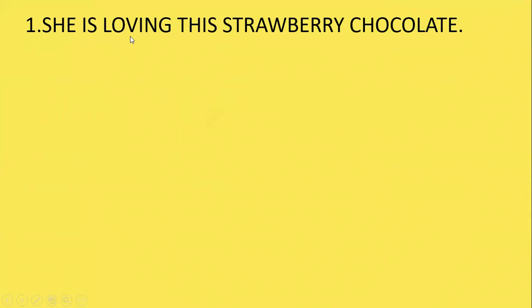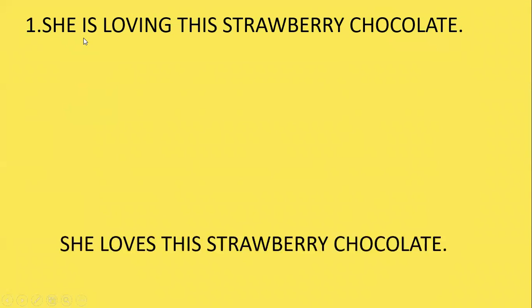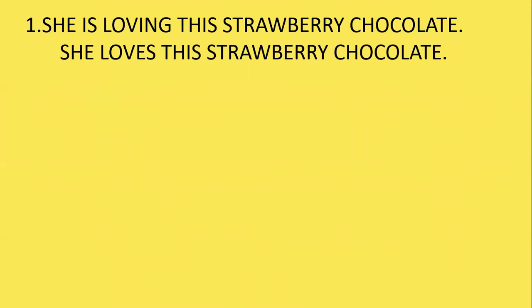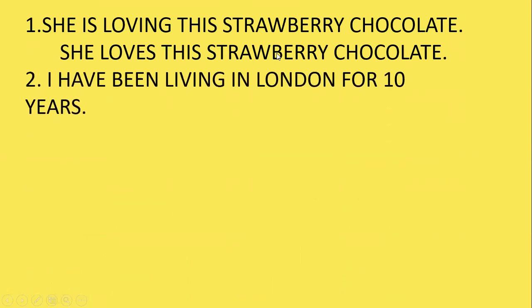Look at this given example: 'She is loving the strawberry chocolate.' Is this sentence structure correct? 'Loving' — the word 'love' is a stative verb, so you shouldn't add -ing. The right sentence here is: 'She loves this strawberry chocolate.'